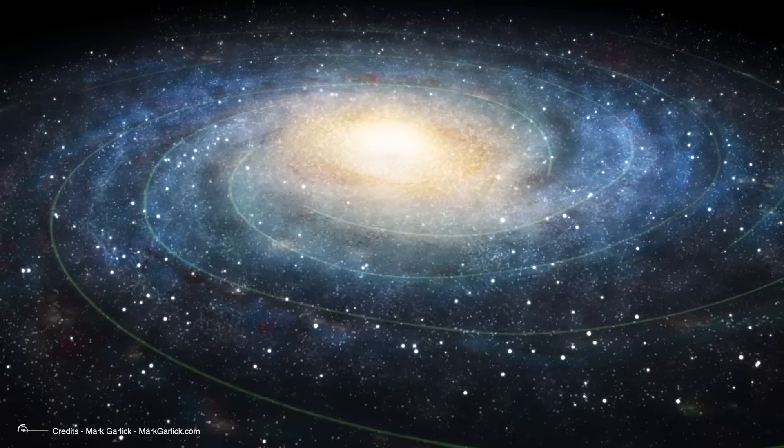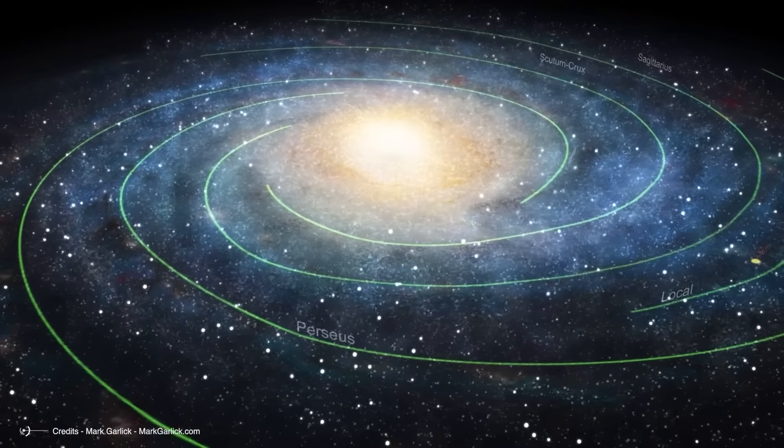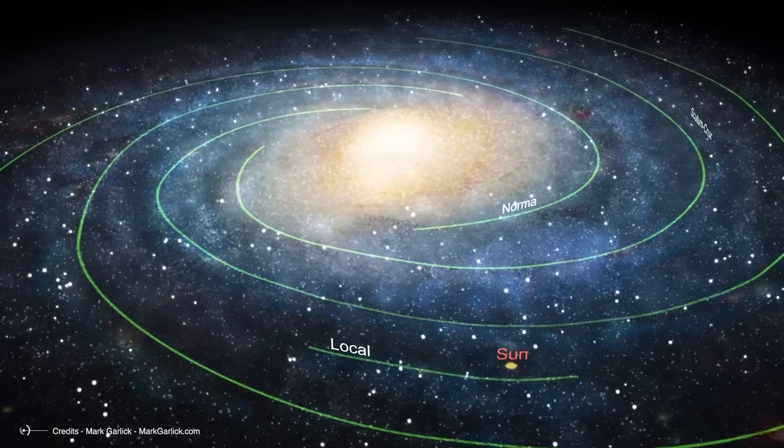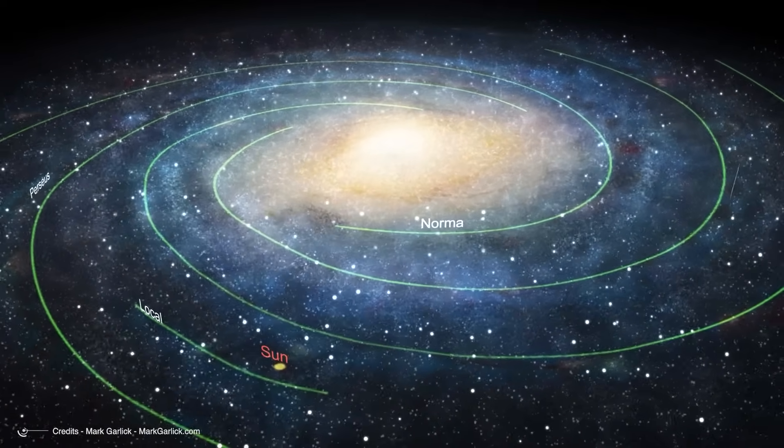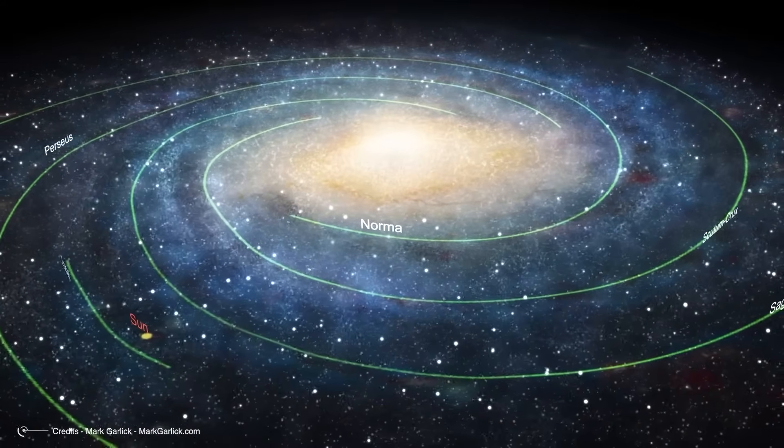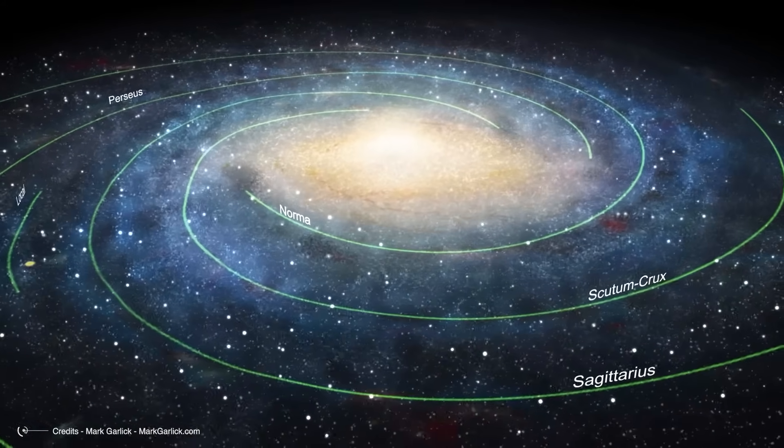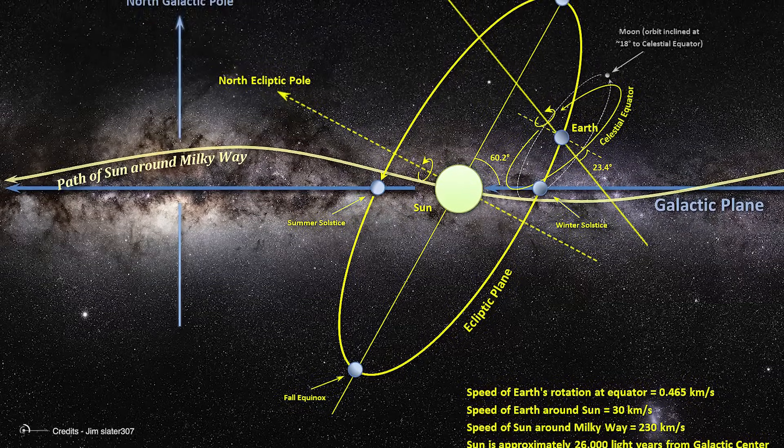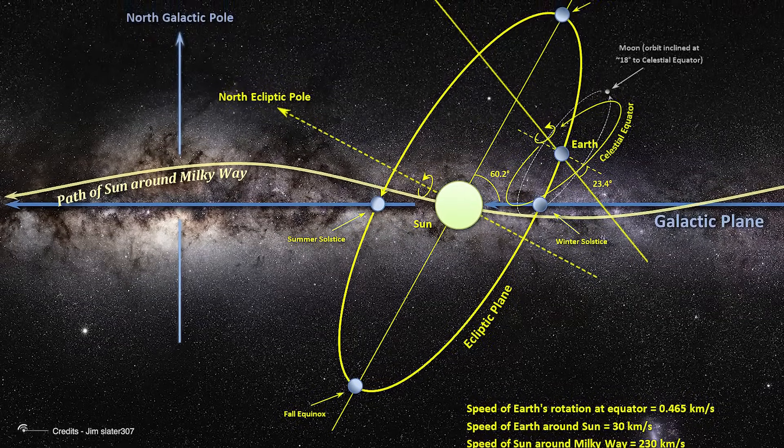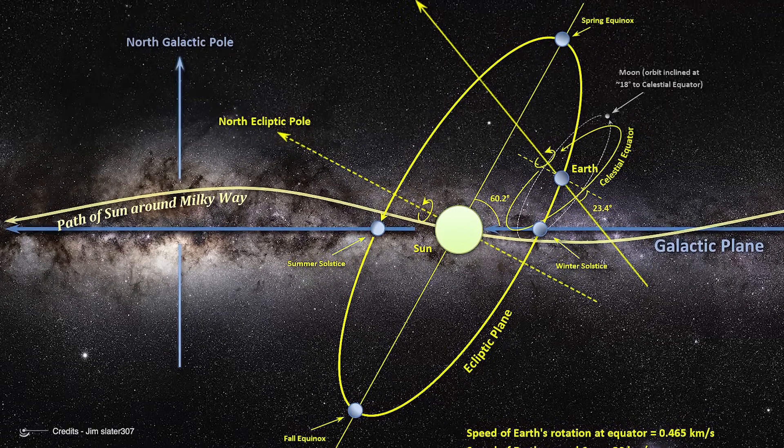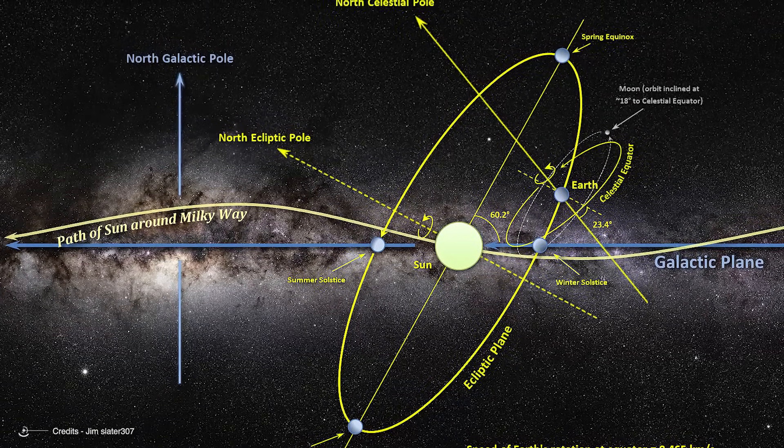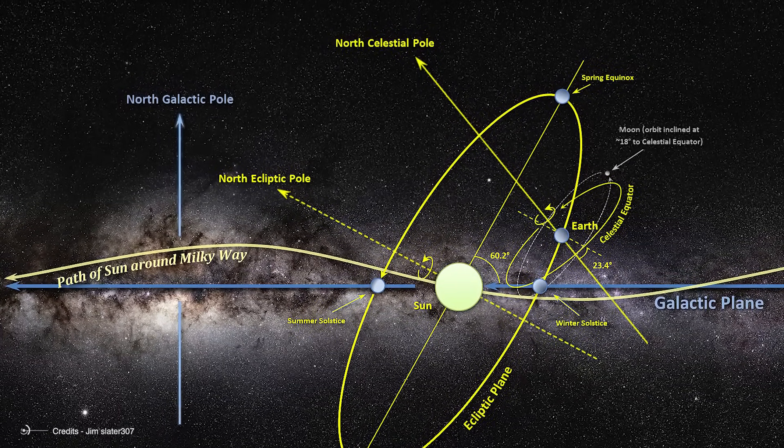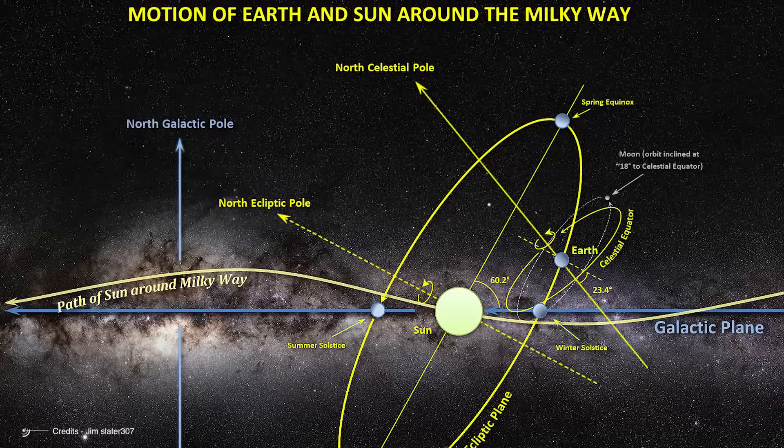Right now, our solar system is traveling through what astronomers call the local interstellar cloud, a region of slightly higher density gas and dust spanning roughly 30 light years across. Yet despite currently hosting our entire solar system, how many science documentaries have ever mentioned it? This interstellar environment directly interacts with our heliosphere, compressing it from certain directions and extending it in others, creating asymmetries that no simplified model could ever properly represent. The establishment science on these interactions is deafening.